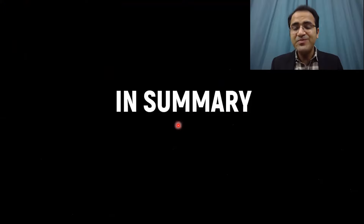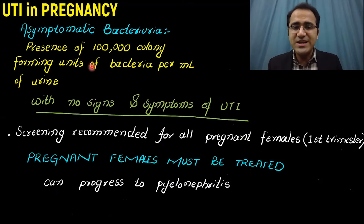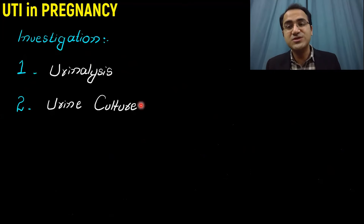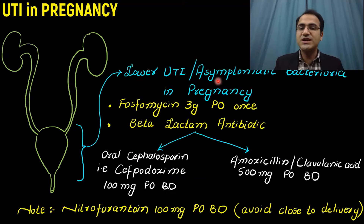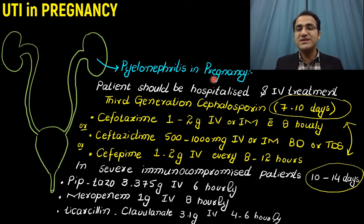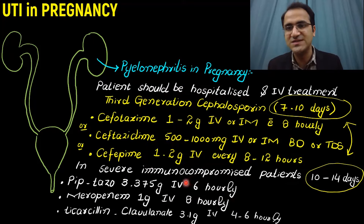In summary, UTI can be either symptomatic or asymptomatic, and asymptomatic bacteriuria must be treated in pregnancy with screening in the first trimester. Investigations including urinalysis and urine cultures must be performed because UTI in pregnancy is complicated. Drugs to avoid include fluoroquinolones, trimethoprim-sulfamethoxazole, and aminoglycosides. Lower UTI is treated with fosfomycin or amoxicillin-clavulanic acid. Pyelonephritis requires hospitalization, and severe or immunocompromised patients receive 10 to 14 days of treatment.